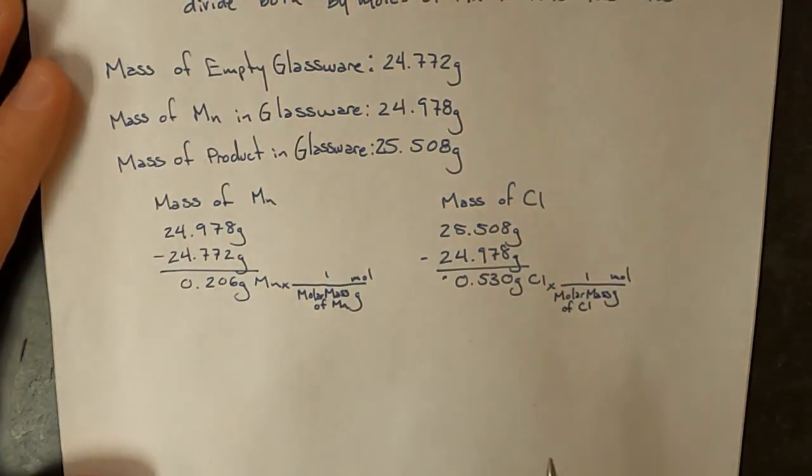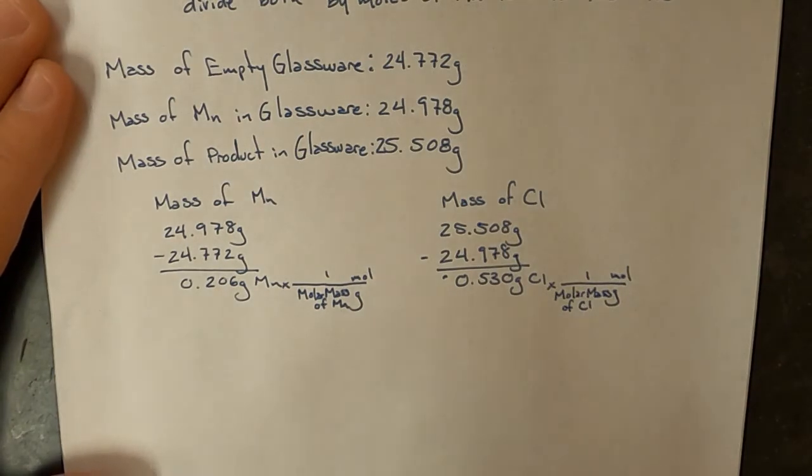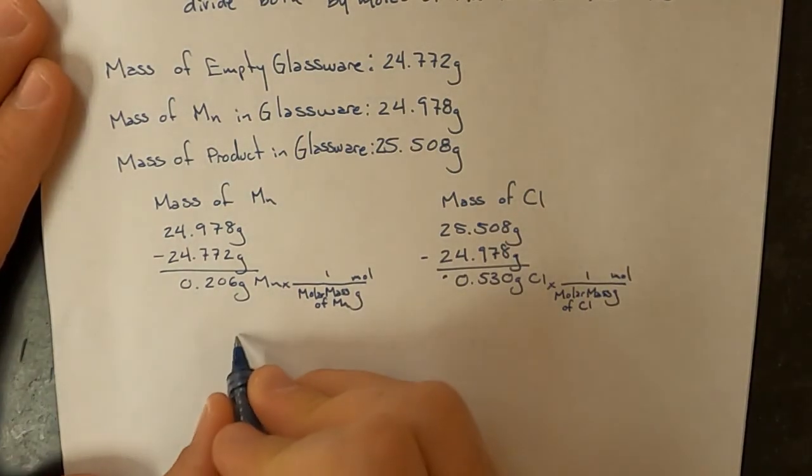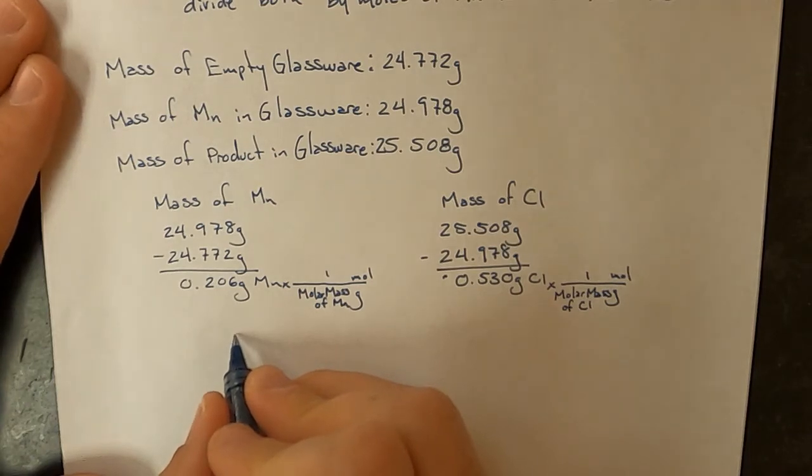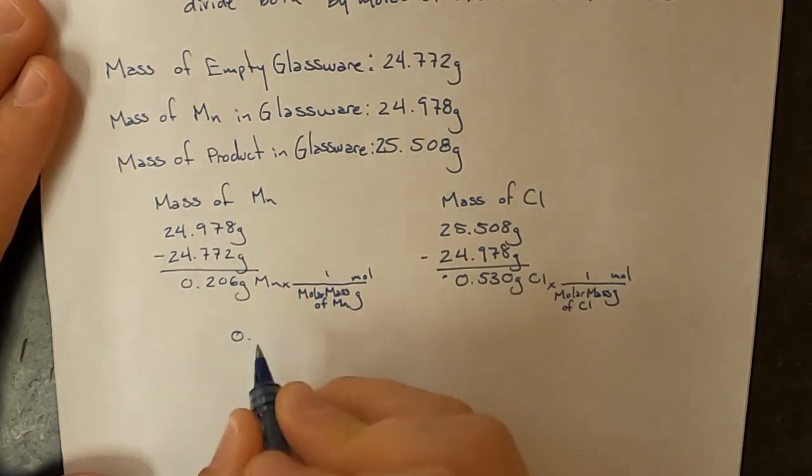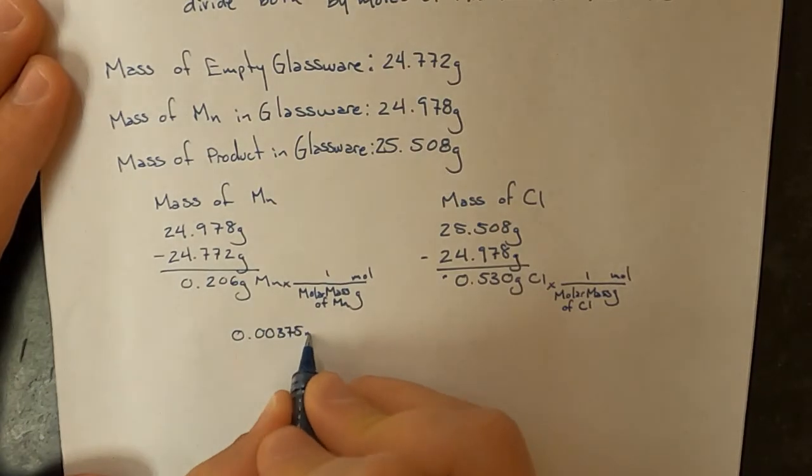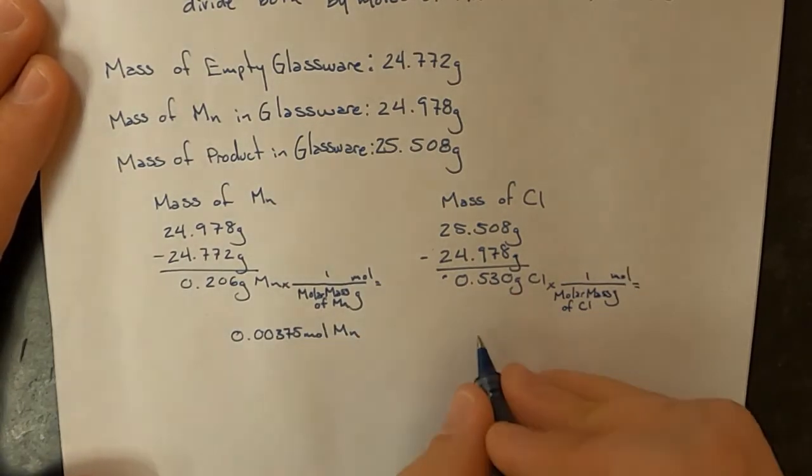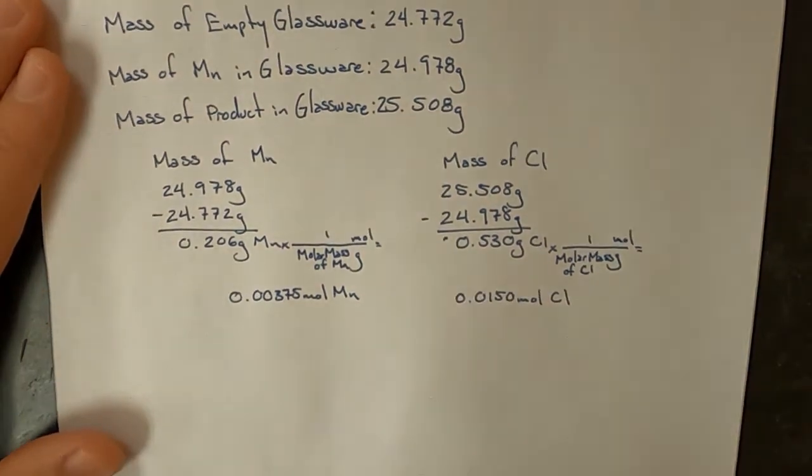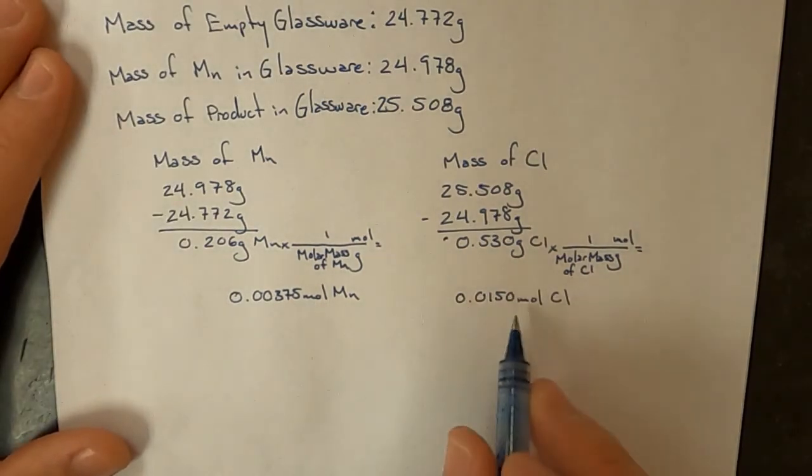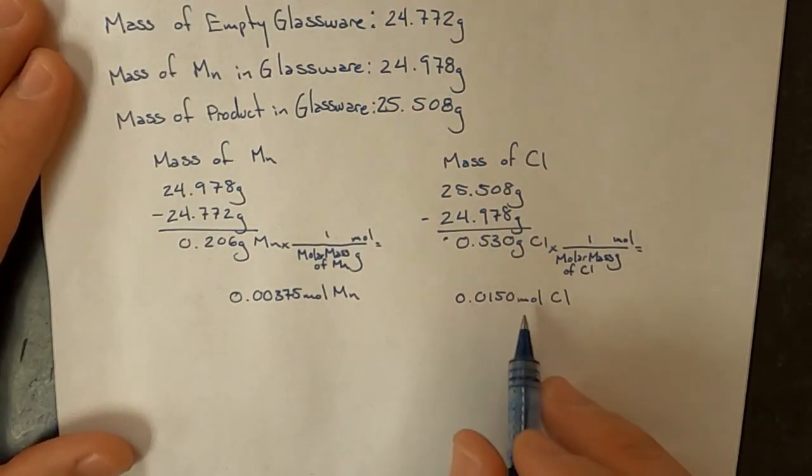When you find those molar masses and you do this correctly, I got that I had 0.00375 moles of manganese and 0.0150 moles of chlorine. You're going to divide both of these by the smallest amount so that you can get a ratio.